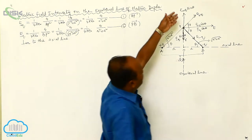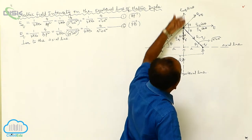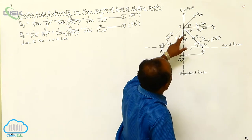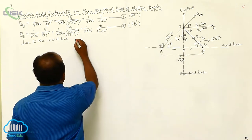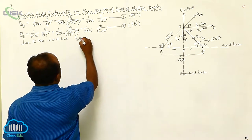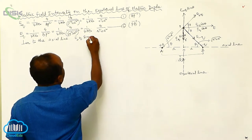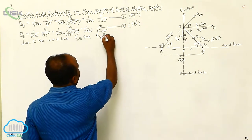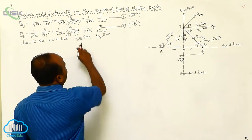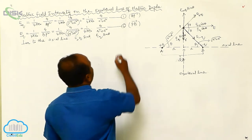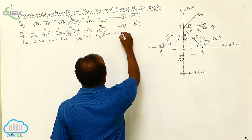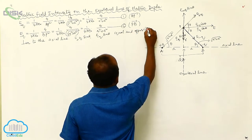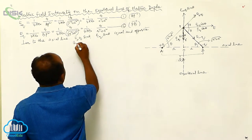Perpendicular to the axial line, EF plus Q sine theta and EF minus Q sine theta are both equal and opposite. Hence, these are cancelled.